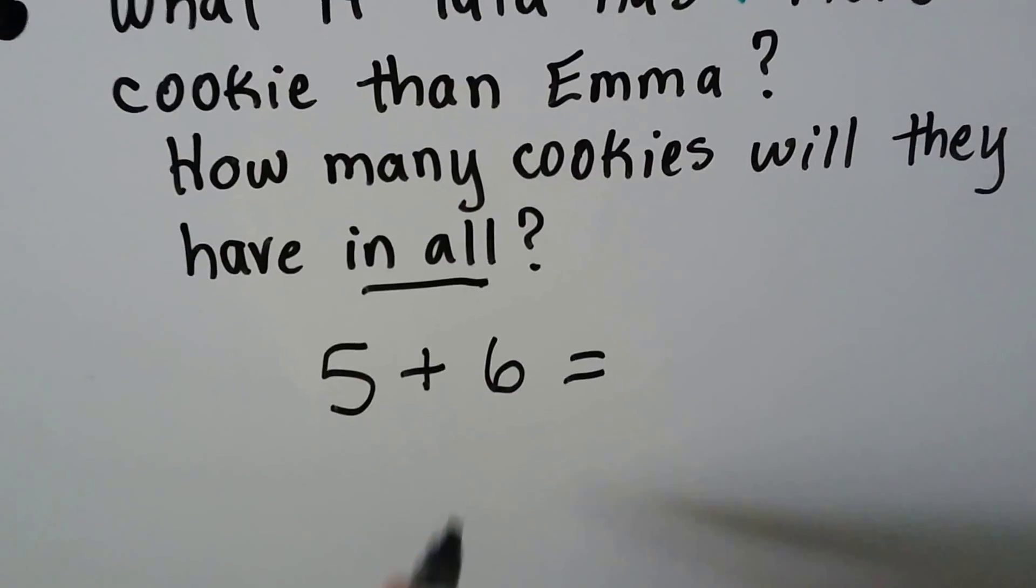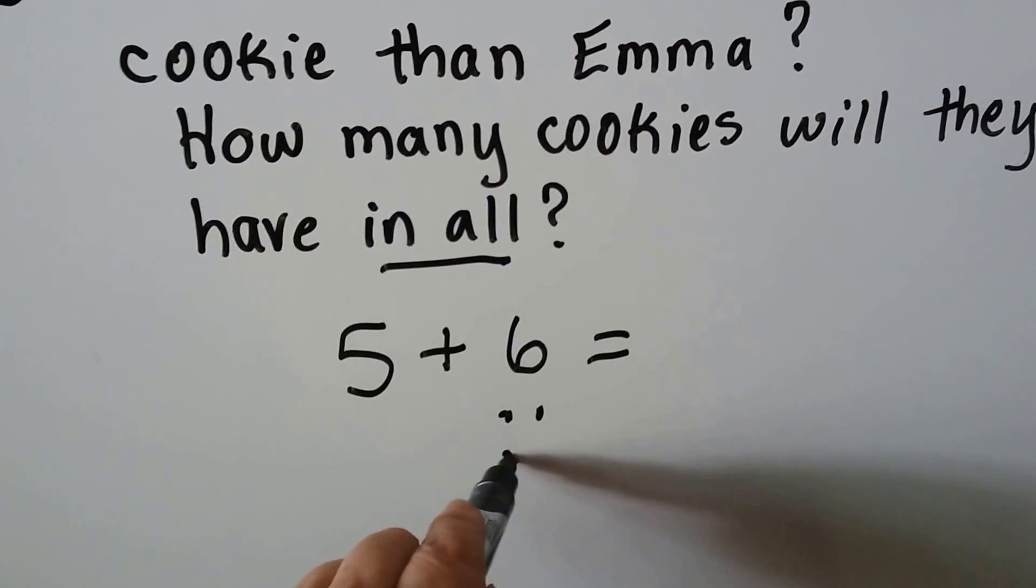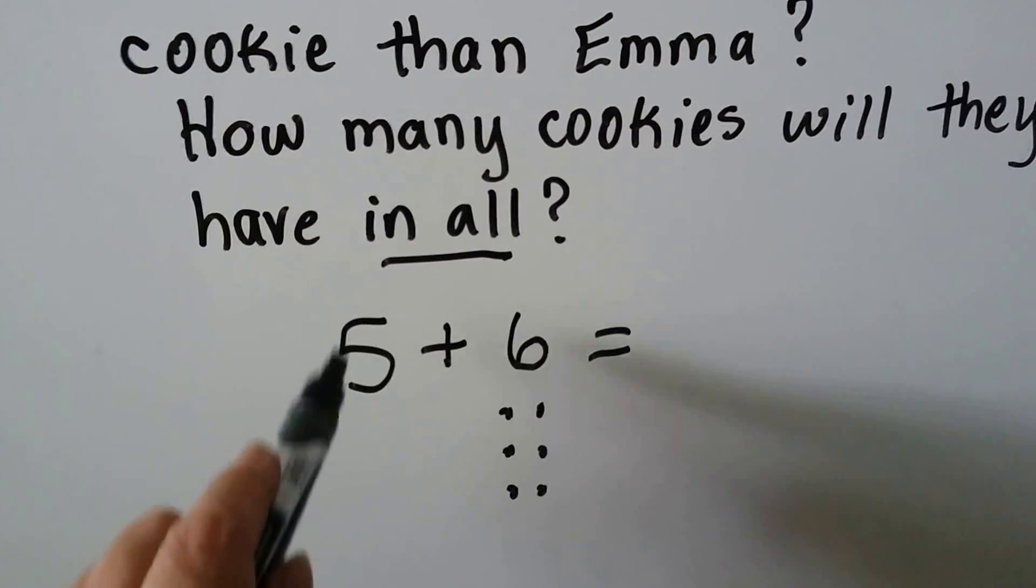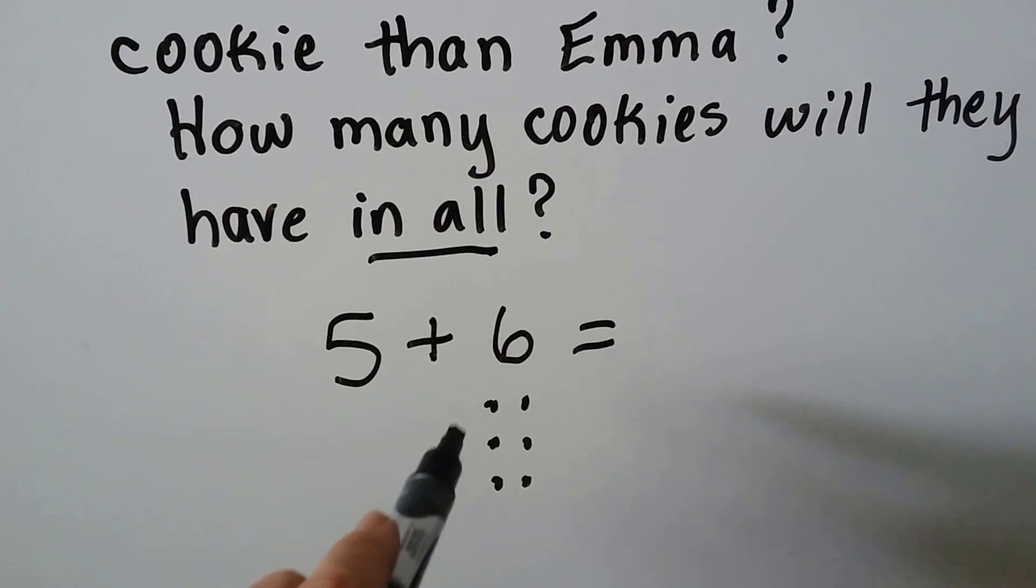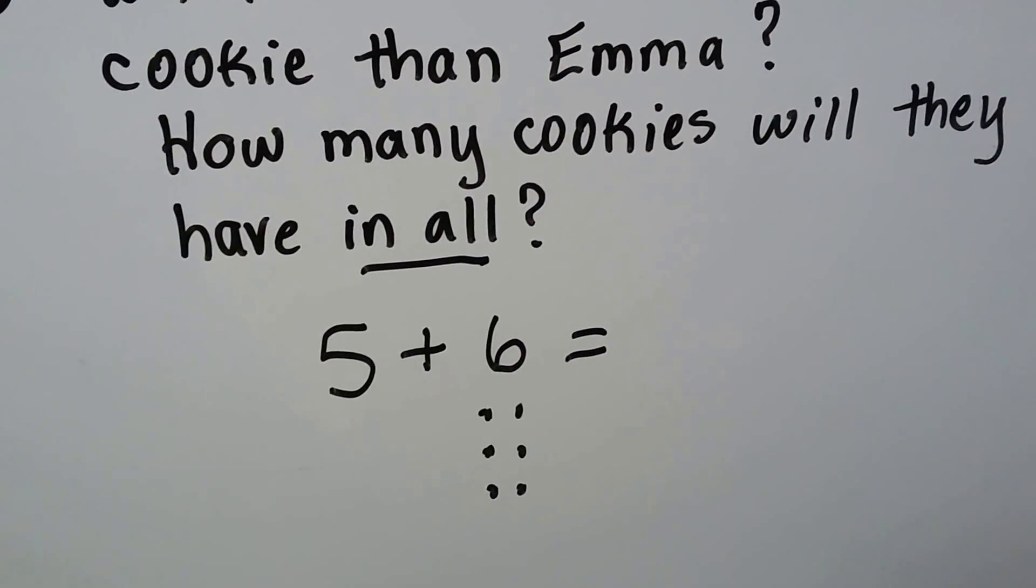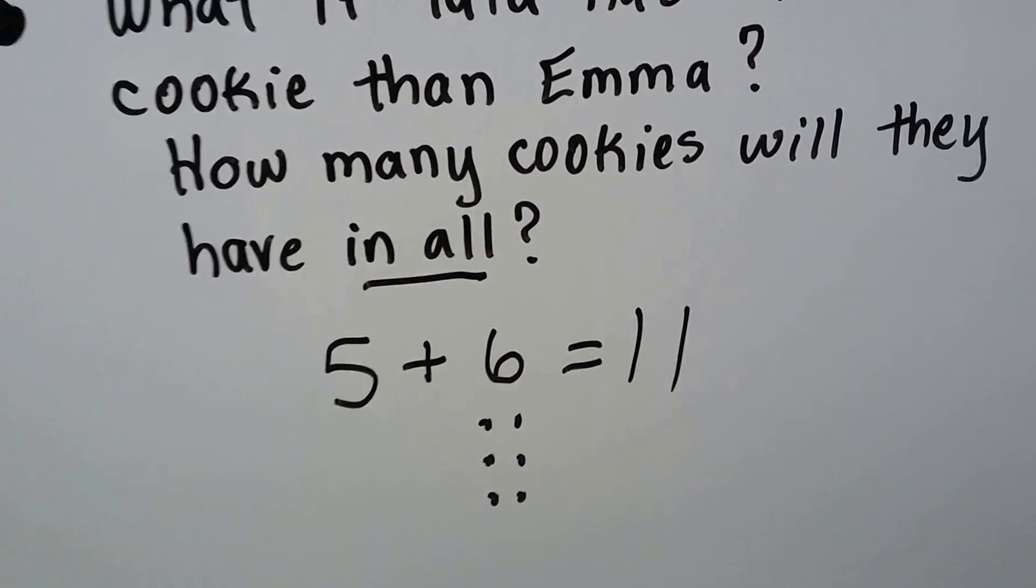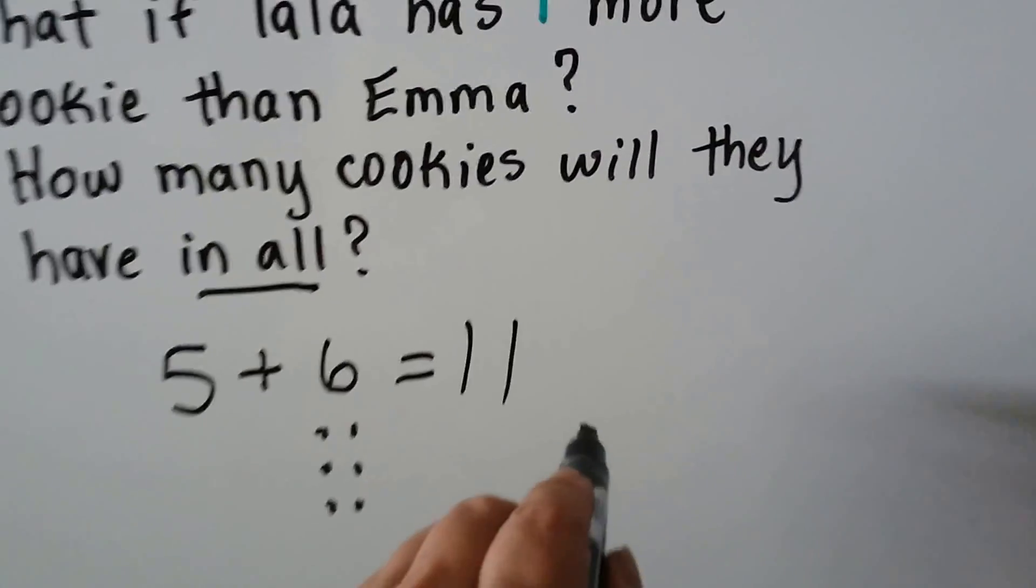Five plus six is five, six, seven, eight, nine, ten, eleven. So they have eleven cookies in all. Eleven cookies.